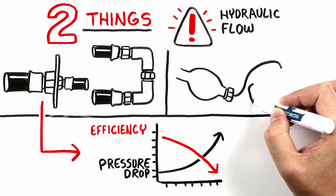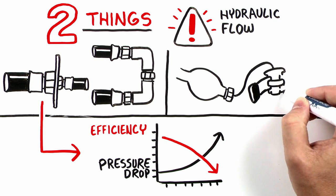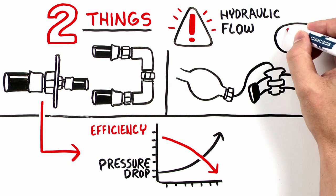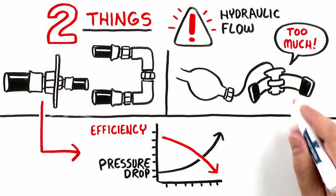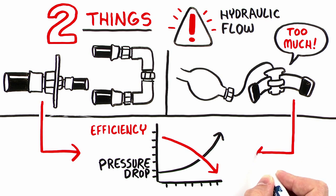Two, the forklift delivers significantly more flow than the attachment was optimally designed to accept. This also contributes to increased pressure drop. Again, not a good thing.